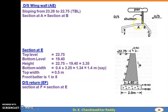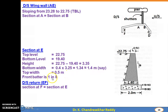Downstream side wing wall (AE): slopes from 23.28 to 22.75 (downstream bank top level). Section at A is same as section at B. Section at E: top level 22.75, bottom 19.40, height 3.35 m, bottom width = 0.4 × 3.35 = 1.34 m, say 1.4 m; top width 0.5 m, front batter 1 in 8. Downstream side return (EF): it is horizontal, so provide the same section as at E throughout to point F.